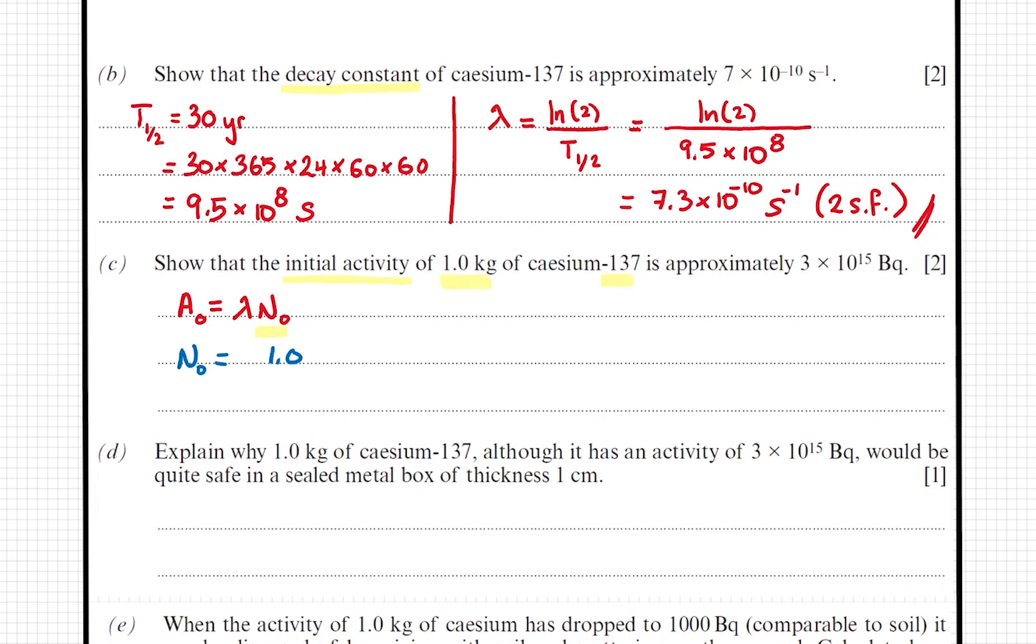If we divide the mass of the sample by the mass of 1 atom, that will give us the number of nuclei, N. Here, I'm multiplying 137 by 1.66 times 10 to the power of minus 27 to convert atomic mass units into kilograms. The rest is just easy substitution.